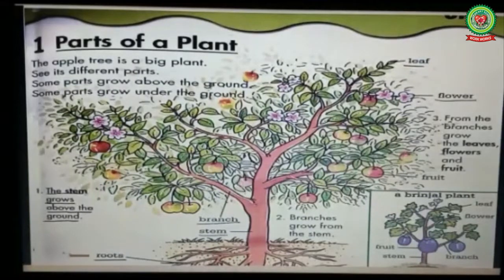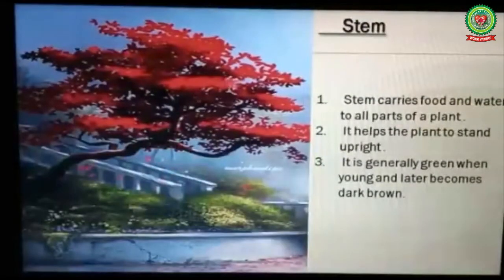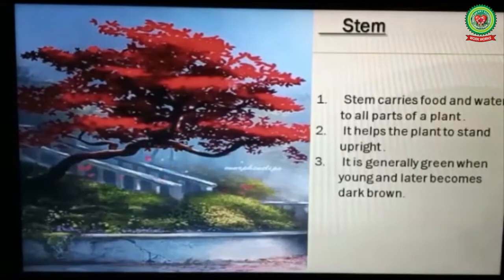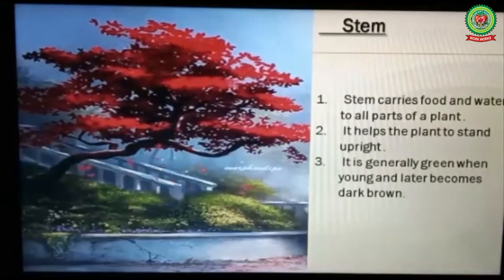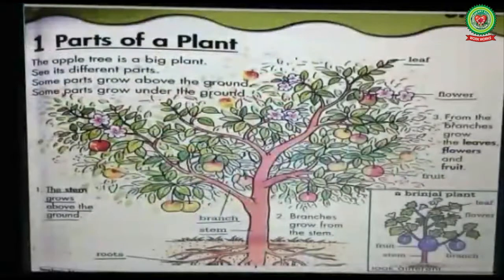In this class we will learn about different parts that grow above the ground. Number one: stem. The stem grows above the ground. Stem is a part of the plant that grows above the ground. Stem carries food and water to all parts of a plant. It helps the plant to stand upright. It is generally green when young and later becomes dark brown.